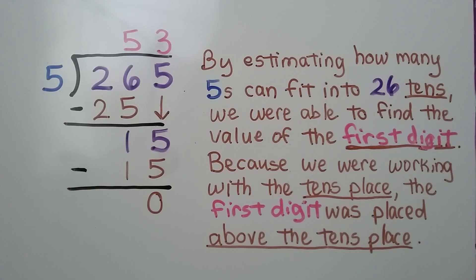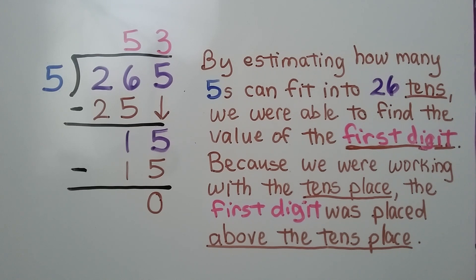By estimating how many 5's can fit into 26 tens, we were able to find the value of the first digit. And because we were working with the tens place, the first digit was placed above the tens place, above the 6.